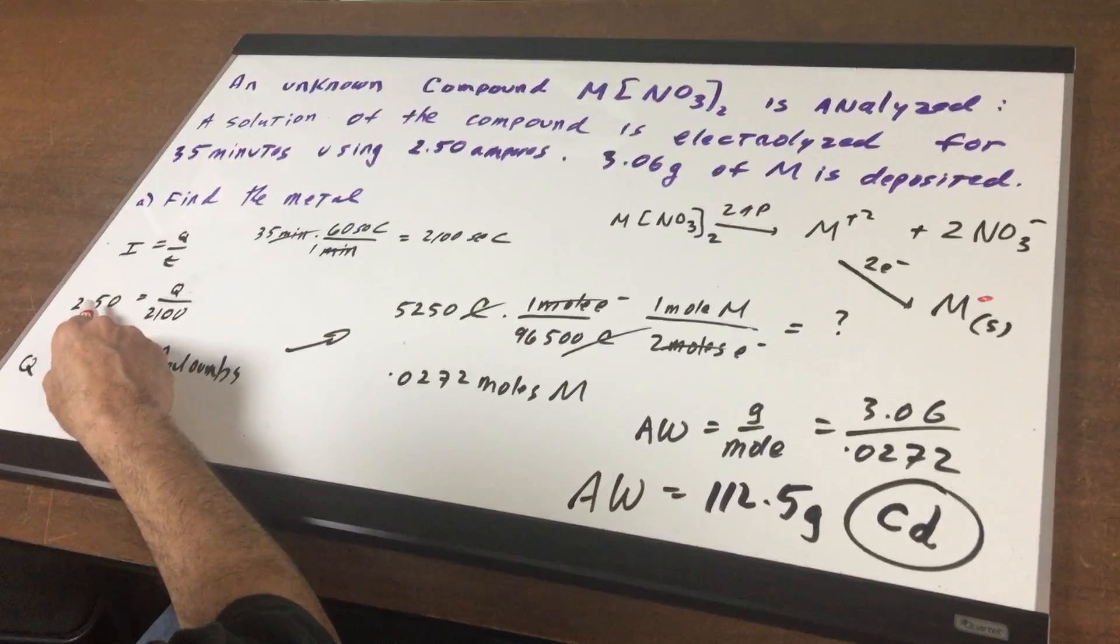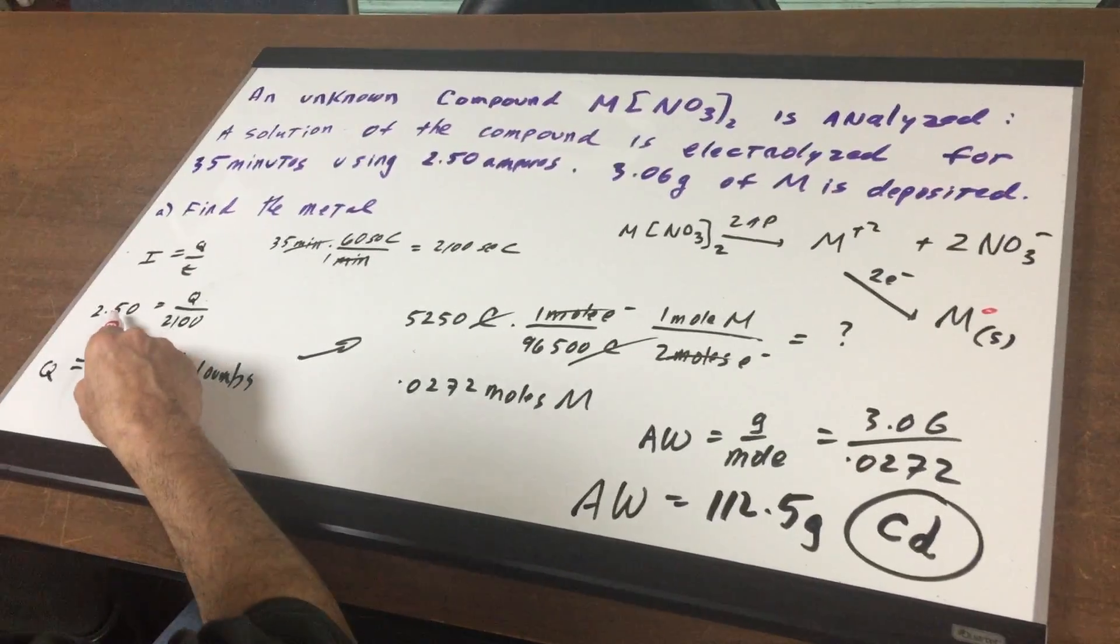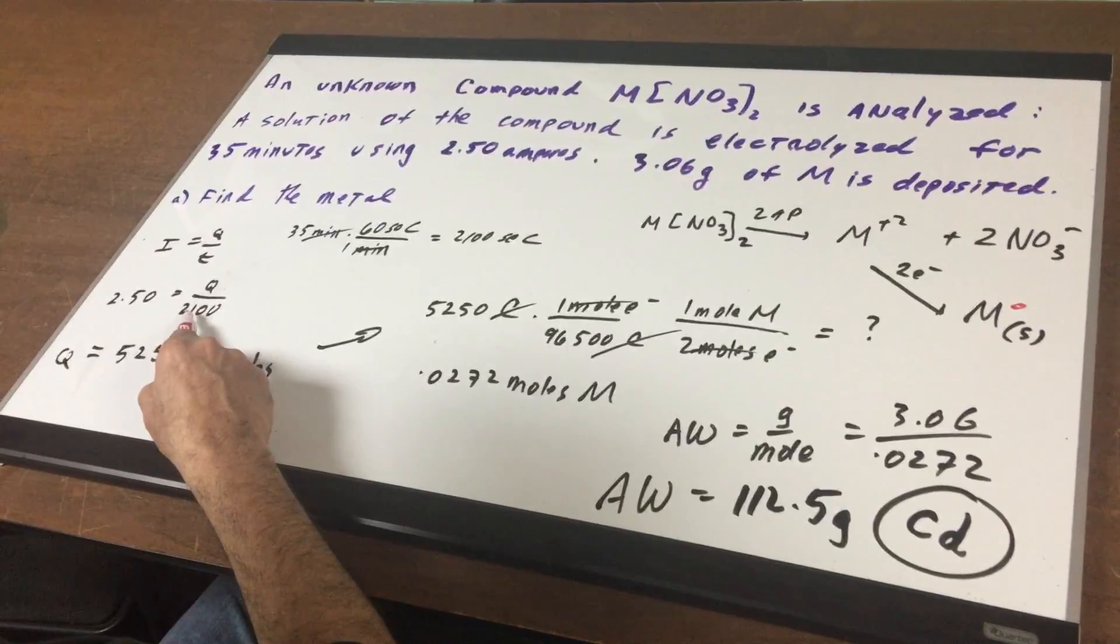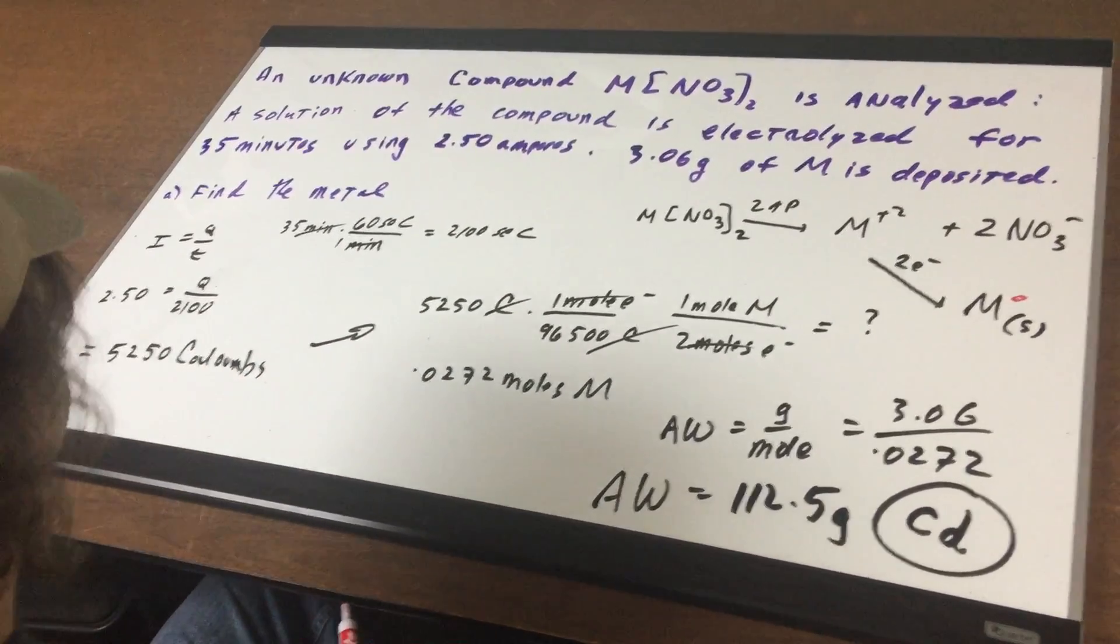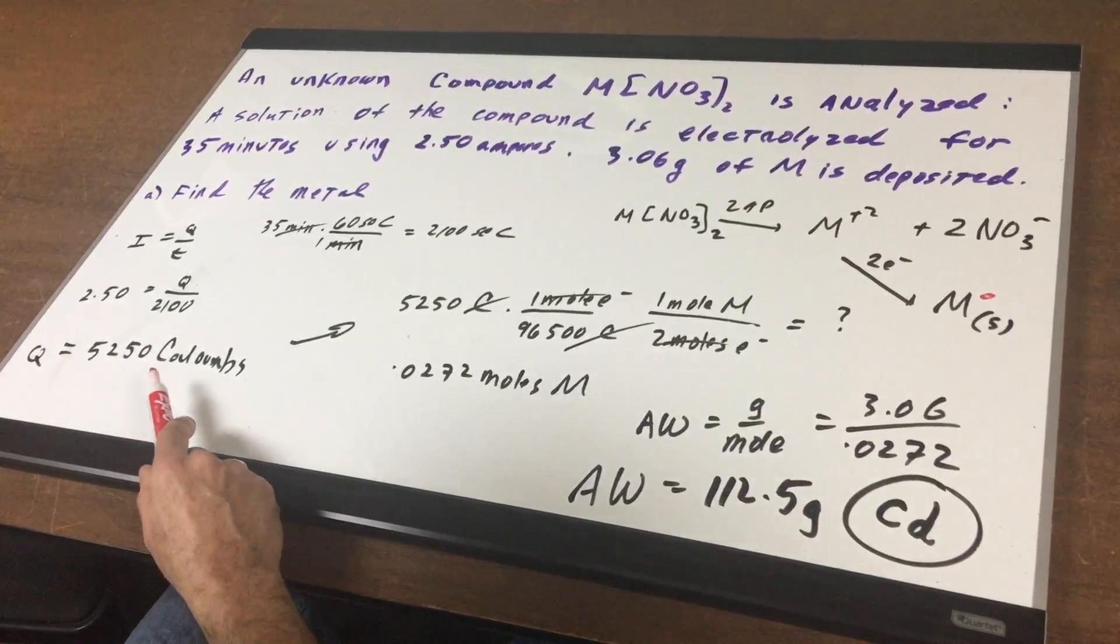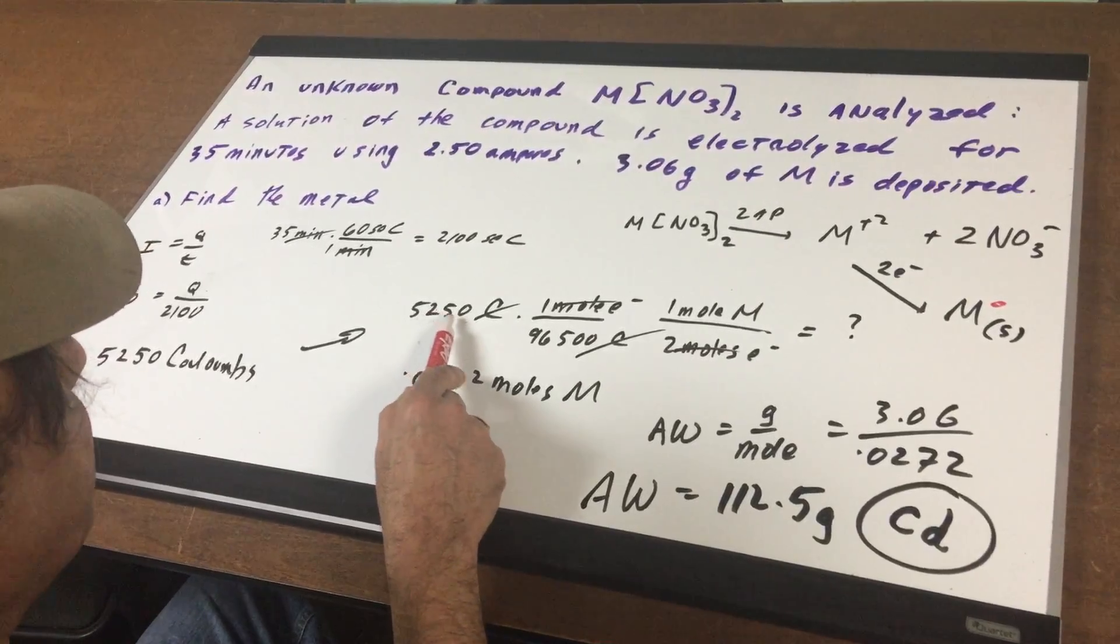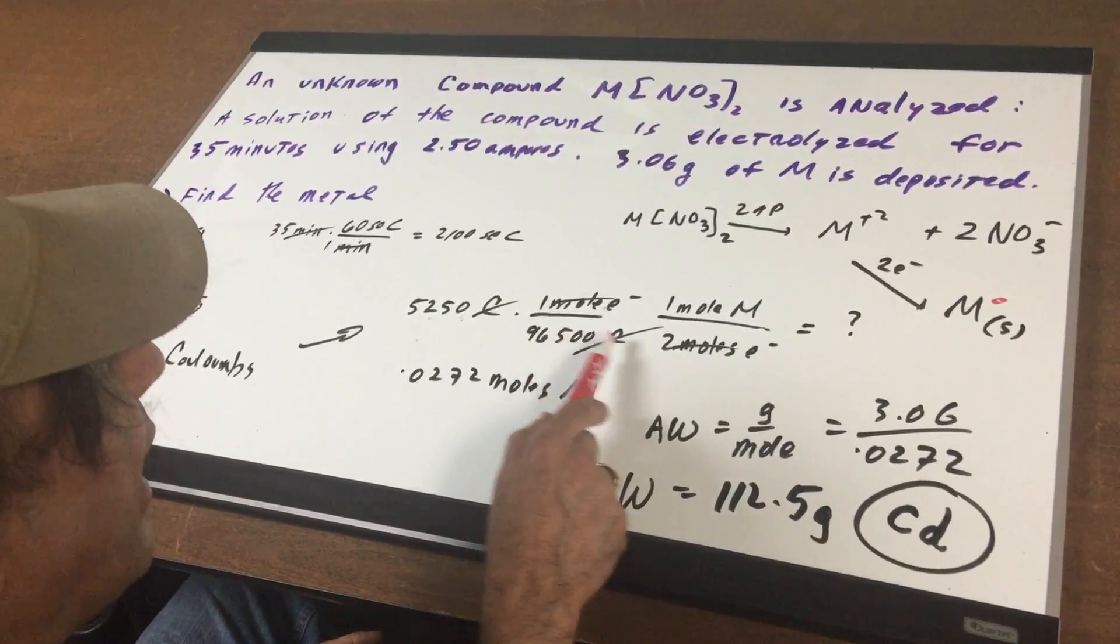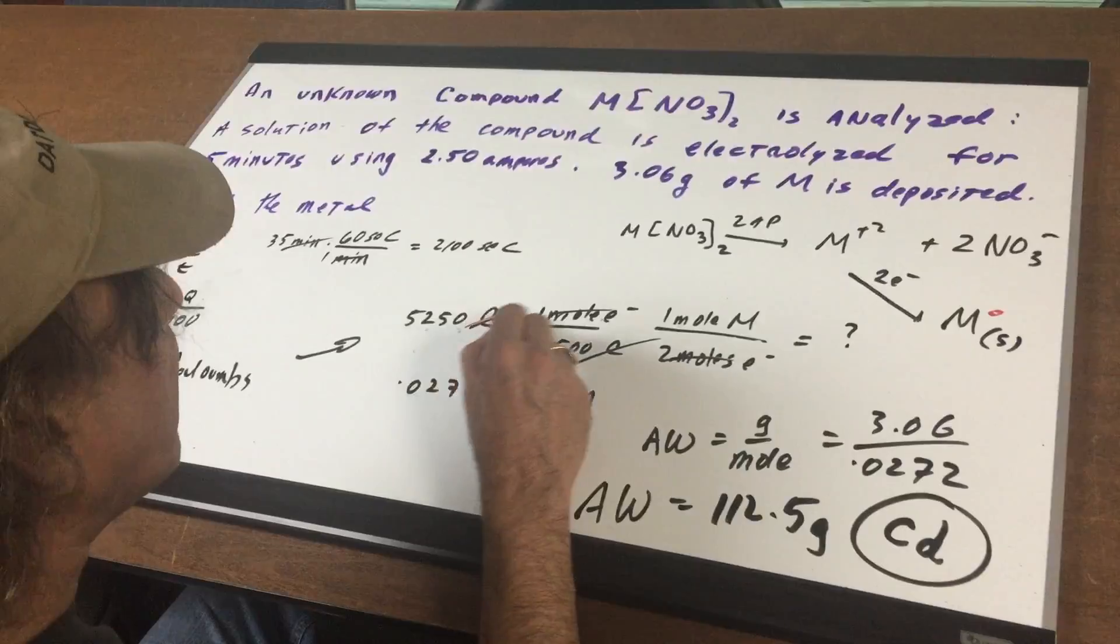35 times 60 seconds is 2100 seconds. I go in and I plug into the I equals Q over T formula. We know the current in amperes is 2.5. The time is 2100. That gives me 5,250 coulombs of charge. What I do is understand that one mole of electrons is 96,500 coulombs. That number will be given to you. So relax on that.